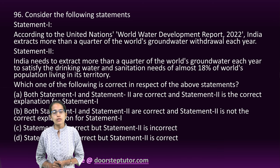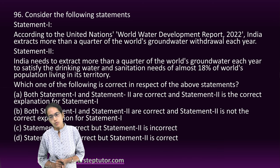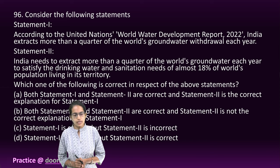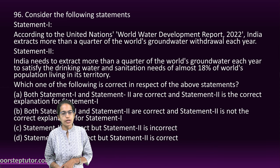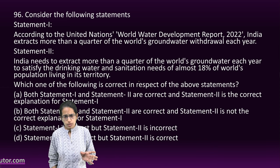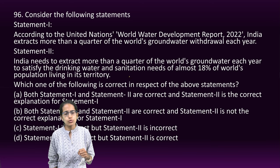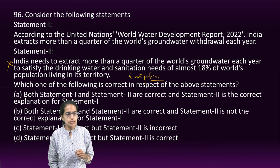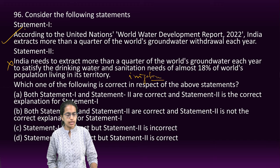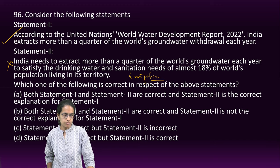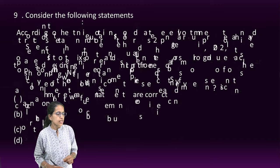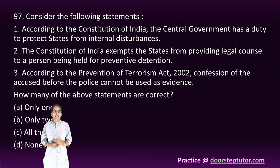The UN World Water Development Report states that more than a quarter of global groundwater withdrawal is from India. However, most of the groundwater extracted is used for irrigation purposes, not for drinking water. So the second statement is incorrect and the first statement is correct.